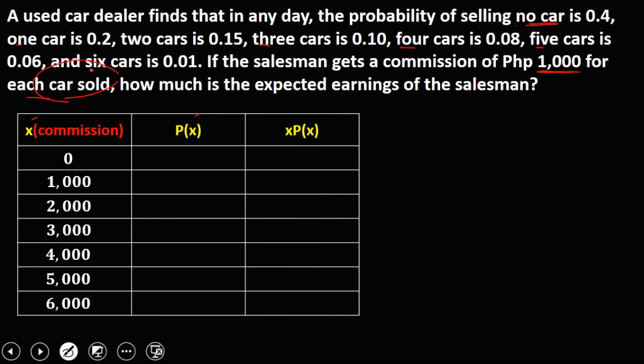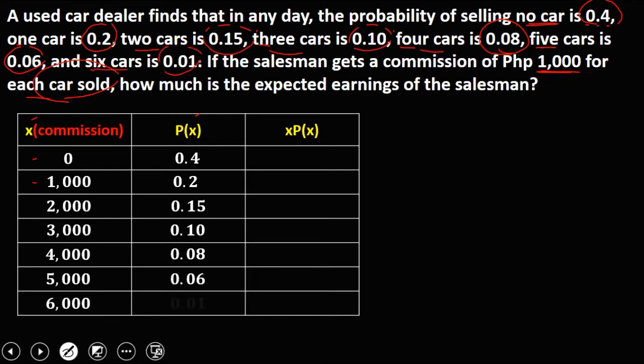And for 6 cars, that's 6,000. Then the probability of having a 0 commission is 0.4, for 1,000 or 1 car, that's 0.2, for 2,000 that's 2 cars, 0.15, then for 3,000 that's 3 cars, 0.10, for 4,000 that's 4 cars, 0.08, for 5,000 that's 5 cars, 0.06, and for 6,000 that's 6 cars, 0.01.